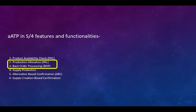SAP S4 HANA brings a lot of new features and functionalities with regards to advanced ATP like product allocation, backorder processing, supply protection, alternative based confirmation, and supply creation based confirmation. Supply creation based confirmation is an integration between ATP and PPDS that we will be covering later. However, today in this video presentation, we are just going to discuss the features and functionalities of product allocation and backorder processing.